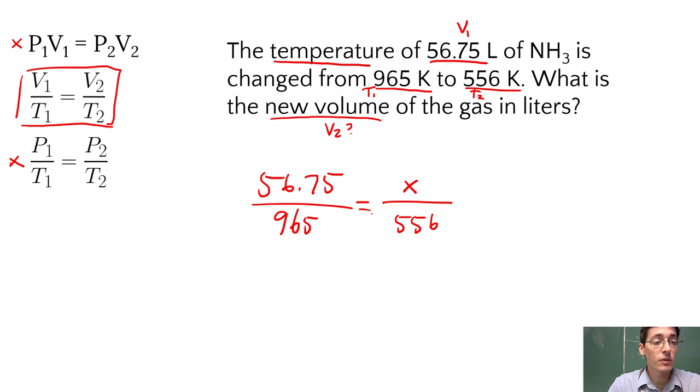To solve a ratio like this, we can cross-multiply. So we're going to say 965X equals 56.75 times 556. We're going to get 31,553.